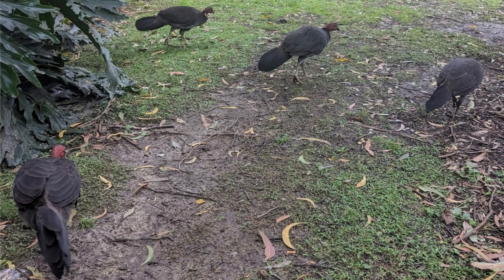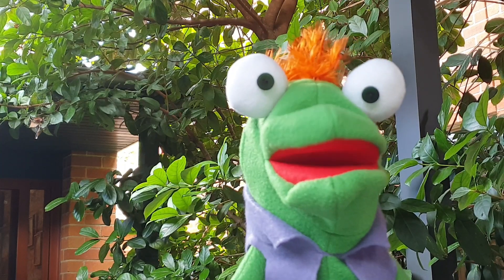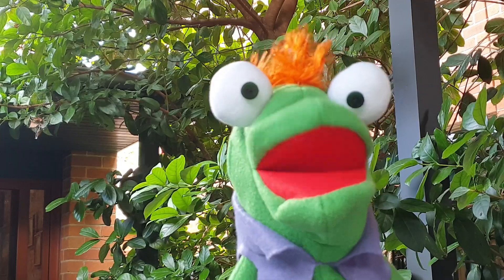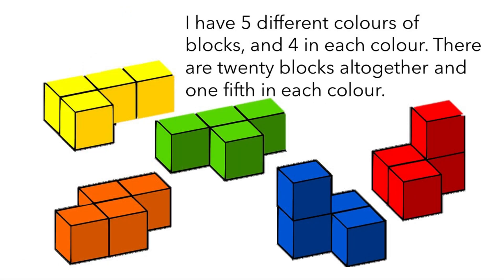they get one quarter each. Look — garden chess! There are 32 pieces on a chessboard, half are black, half are white. There are 200 jelly beans in my jar — if I give you half, we'll get 100 each. I have five different colors of blocks and four in each color. There are 20 blocks altogether, and one fifth in each color.